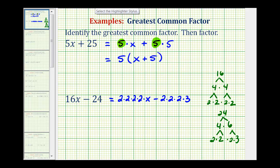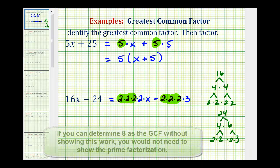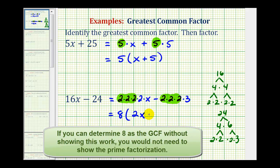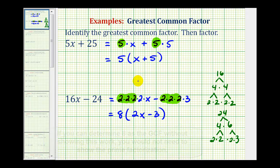Now that both are in prime factored form, we'll identify all of the common factors between these two terms. Notice how both contain 3 factors of 2, and since 2 times 2 times 2 is equal to 8, our greatest common factor is 8. We'll factor out 8 from this expression, leaving us with 8 times the factors not in common, which would be 2x minus 3. We can distribute to check this — we would have 16x minus 24.